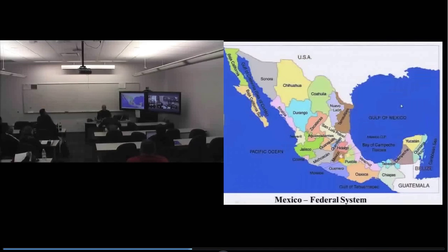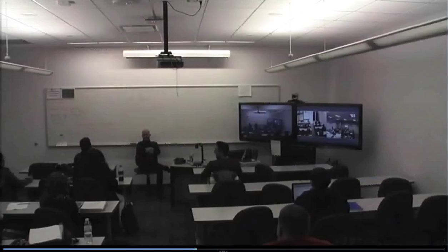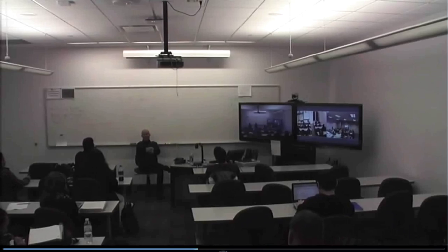Mexico is a federal system. There are about 28 states of Mexico — so where we have Texas, Arizona, and New Mexico, they have Sonora, Chihuahua, and Coahuila. In fact, if you've ever looked at a Mexican peso, it says 'Los Estados Unidos de México' — the United States of Mexico. So they have their states; we have ours.